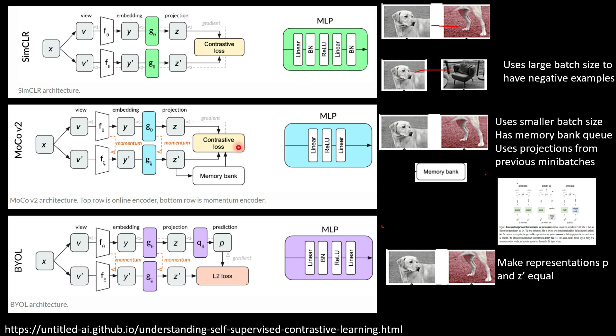In momentum contrastive learning, they reduce the batch size by using projections from previous mini-batches to get negative examples. For the positive pair, they can have two views of image X, and for negative pairs they use projections from the memory bank. There is the encoder network and a momentum encoder network.